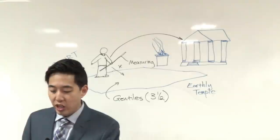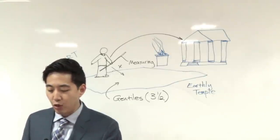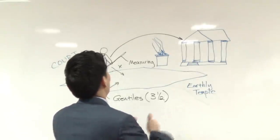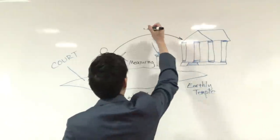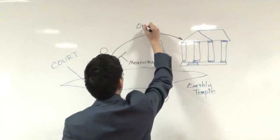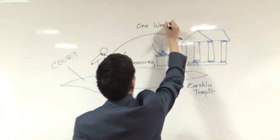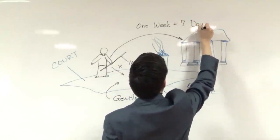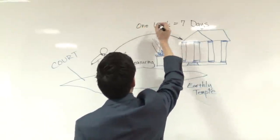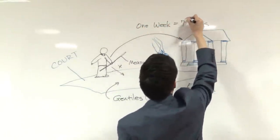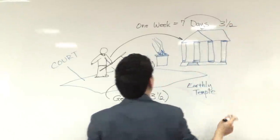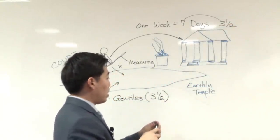This passage has been used and he shall confirm the covenant with many for one week and the midst of the week. So it says one week, midst of the week, right? So it's one week equals seven days. So right here, one week equals seven days. Now notice it says in the middle of the week. What's the middle then? That's three and a half.